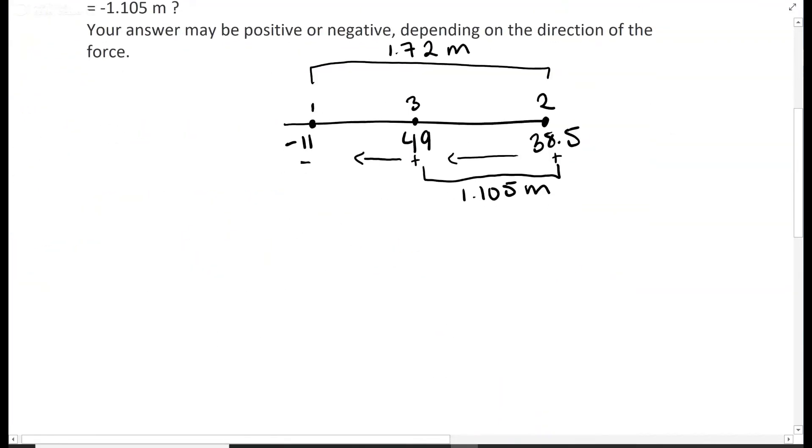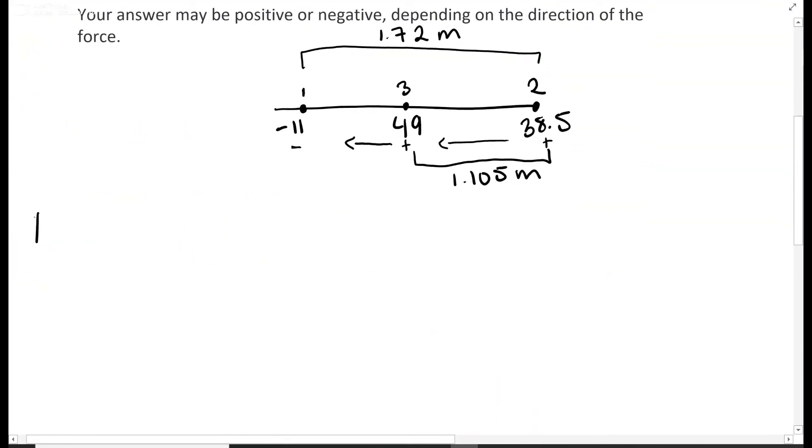So we're going to have F equals k times q1, which is 11 times 10 to the negative 9, times q3, and then over the distance between them, which is 1.72 minus 1.105, and that is squared.